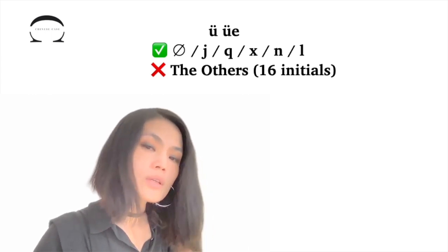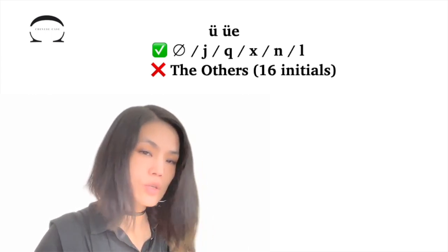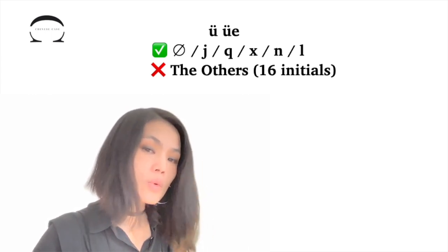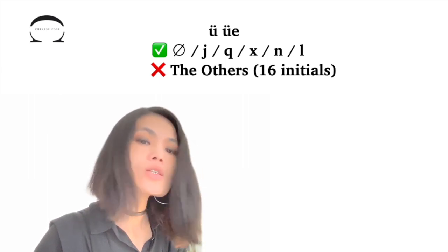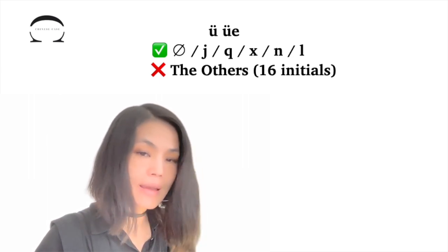These two finals can only be paired with six initials. One is the zero initial, the other five are J, Q, X, N, and L.